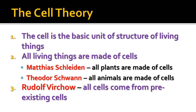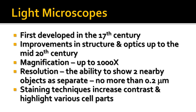Light microscopes were first developed in the 17th century, and up until the middle of the 20th century there were many improvements made to microscope structure and optics. Nowadays most microscopes have a useful magnification of up to about a thousand times. The ones we will use in lab do magnify up to about a thousand times, but we'll only look at things magnified about 400 times.